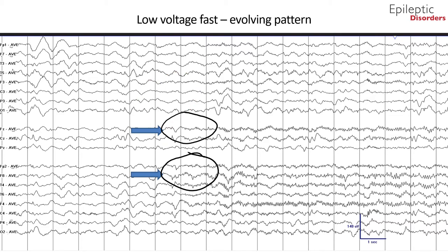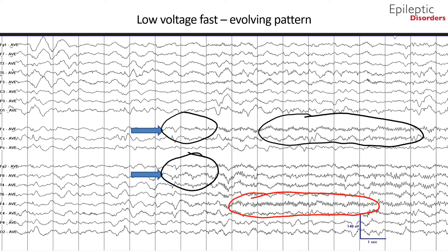This low-voltage fast frequency activity is outlined in the black circle. Additionally noted is spatiotemporal evolution of the seizure with involvement of adjacent F4 channels and temporal T4 and T6 channels towards the end of the page.